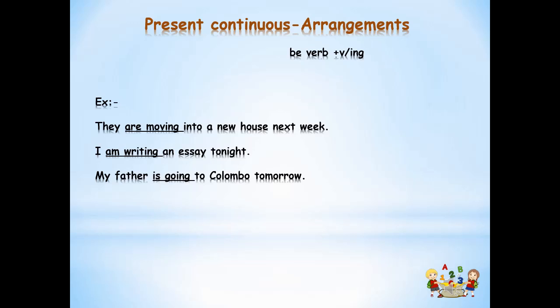Let's look at another example: 'I am writing an essay tonight.' I have planned everything to write the essay tonight. 'My father is going to Kalambo tomorrow.' Father has already told you that he is going to Kalambo tomorrow. We can also use present continuous tense to talk about future happenings or events, especially for arrangements and plans.